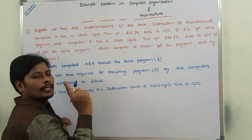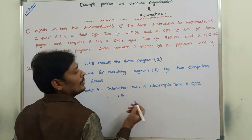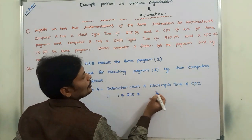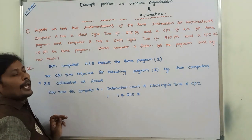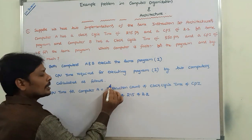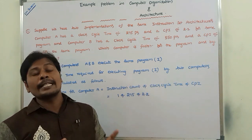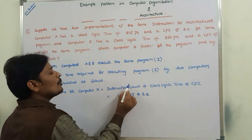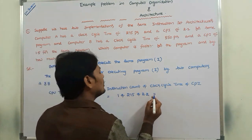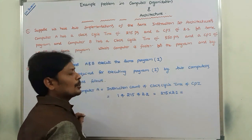For Computer A, the instruction count is 1 (only one instruction). So CPU time for Computer A equals 1 multiplied by the clock cycle time of 275 picoseconds, multiplied by the CPI of 2.2. That gives us 275 into 2.2.